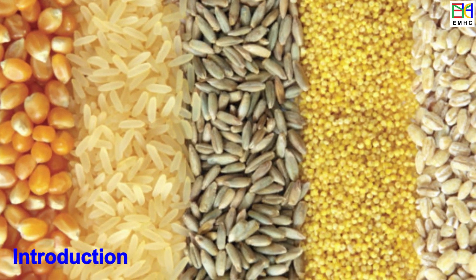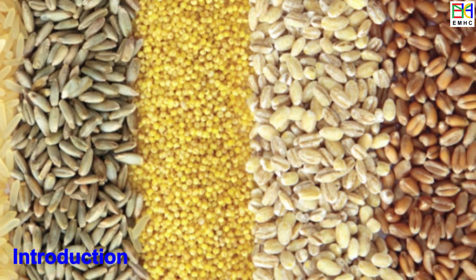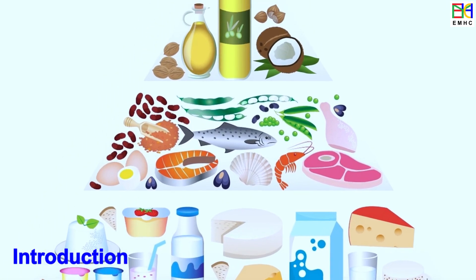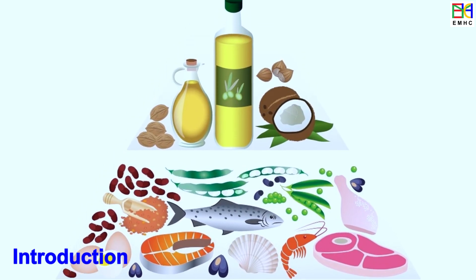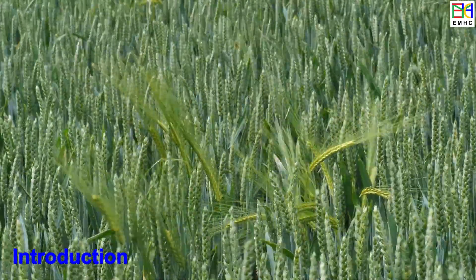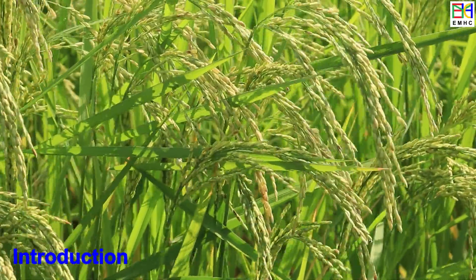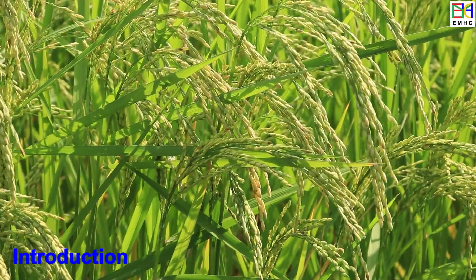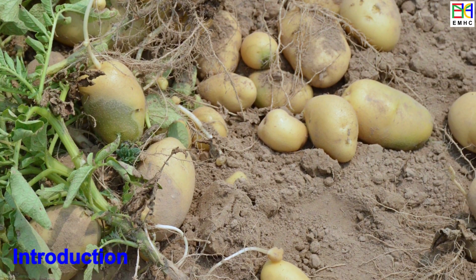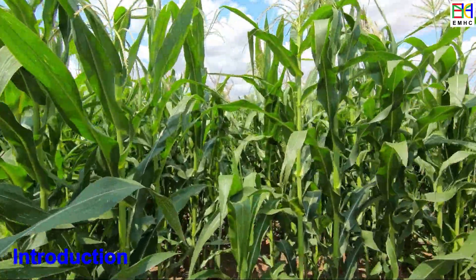Staple food crops such as rice, wheat, maize, and potatoes are essential agricultural commodities that form the foundation of a daily healthy and balanced diet for the world's population. These crops are cultivated on a large scale in various regions around the globe to serve as primary sources of calories and nutrients, and ensure the availability of affordable and accessible food for the world's population.